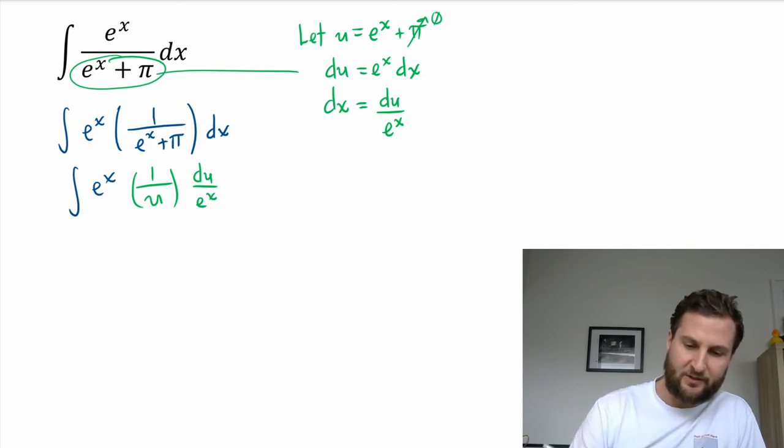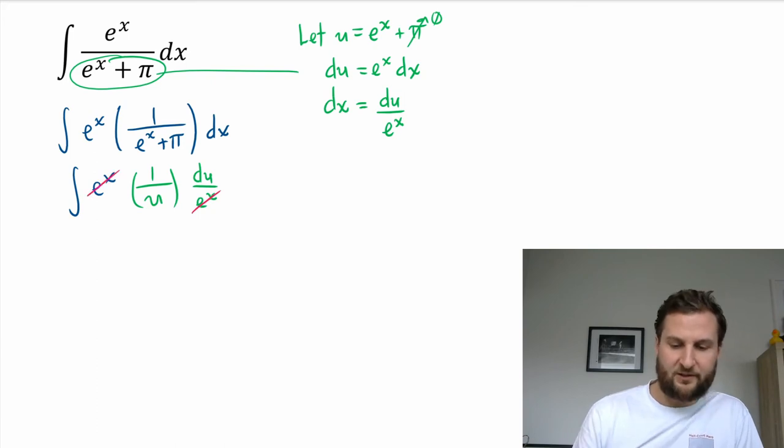So when I replace this, I get du over e to the x, and now this actually looks promising, right? Taking that whole denominator, so this e to the x cancels with that one.